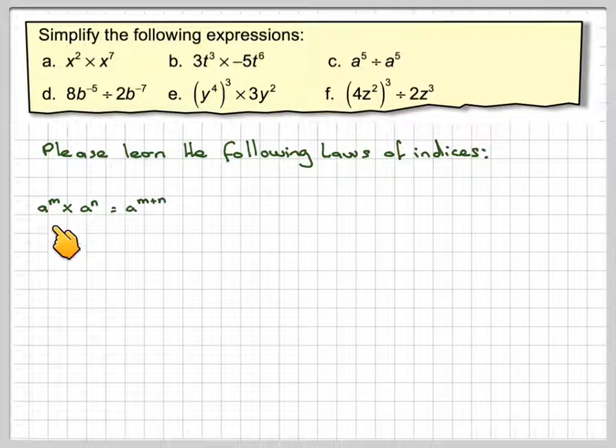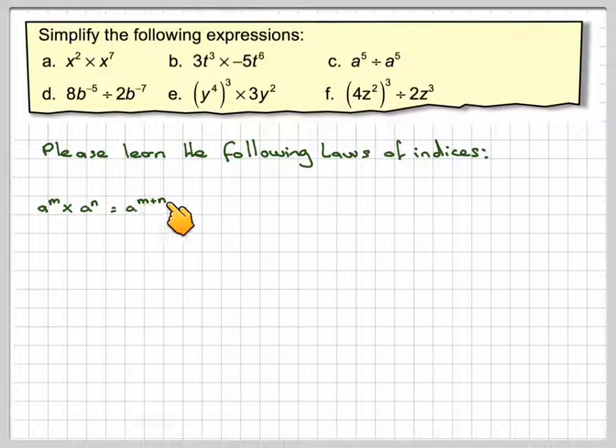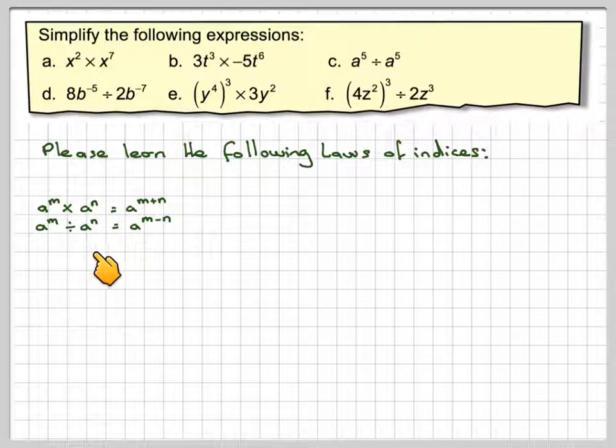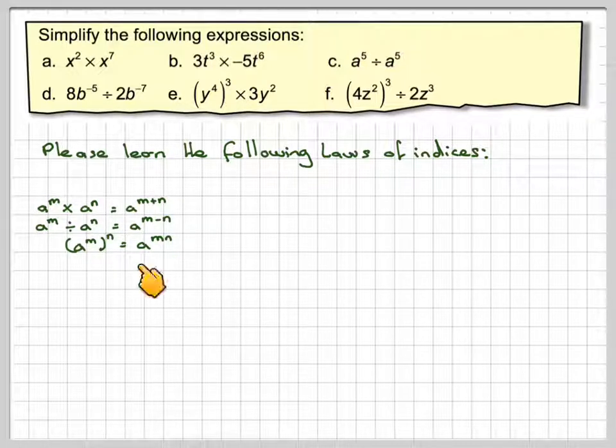So, we should know by now that a to the m times a to the n is the same as a to the m plus n. So you add the powers together when you're multiplying. When you're dividing, a to the m divided by a to the n means you subtract the powers. And then a to the m to the power of n becomes a to the m times n. These are the three basic rules.